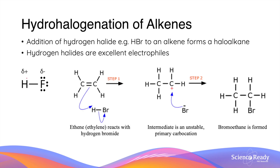The first addition reaction is hydrohalogenation of alkenes. This is when alkenes react with a molecule of hydrogen halide. A hydrogen halide is a diatomic molecule consisting of a hydrogen atom and a halogen atom. Hydrogen halides are excellent electrophiles because the halogen's high electronegativity causes the adjacent hydrogen atom to acquire a strong partial positive charge.